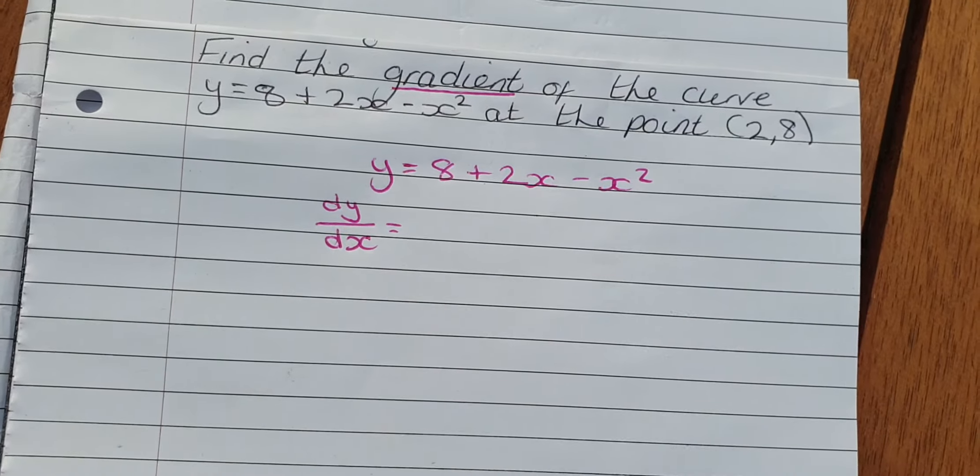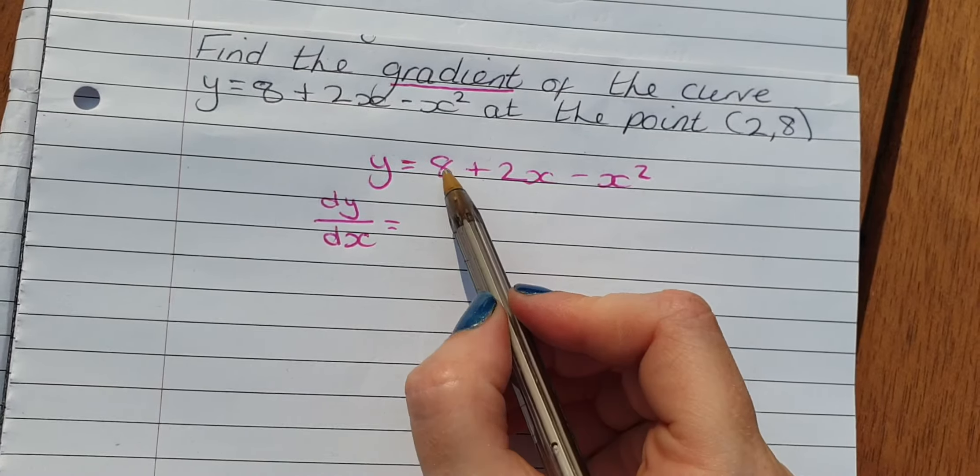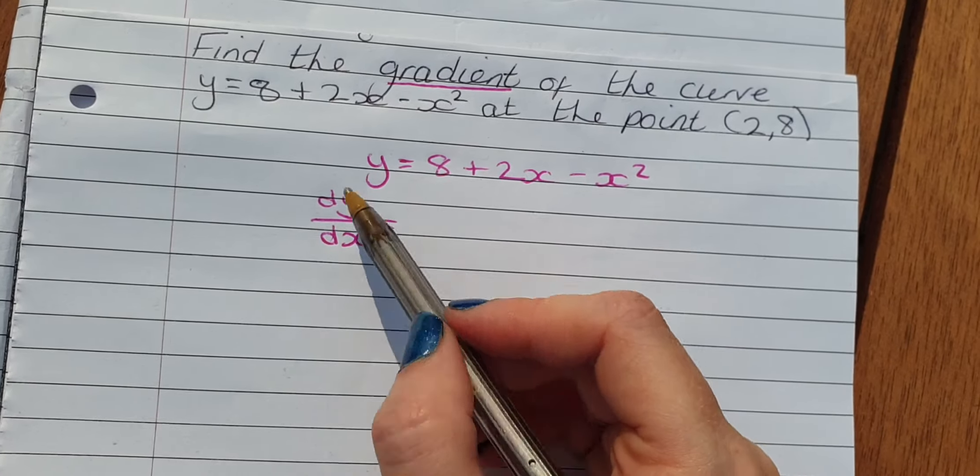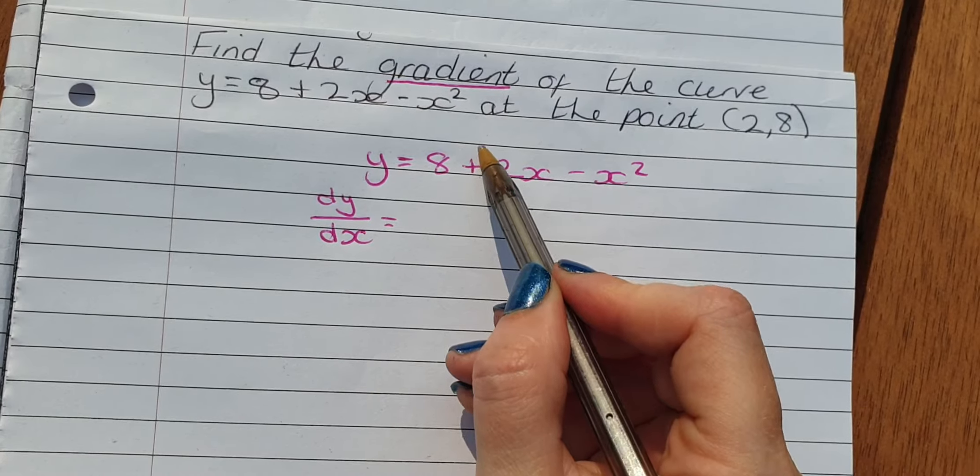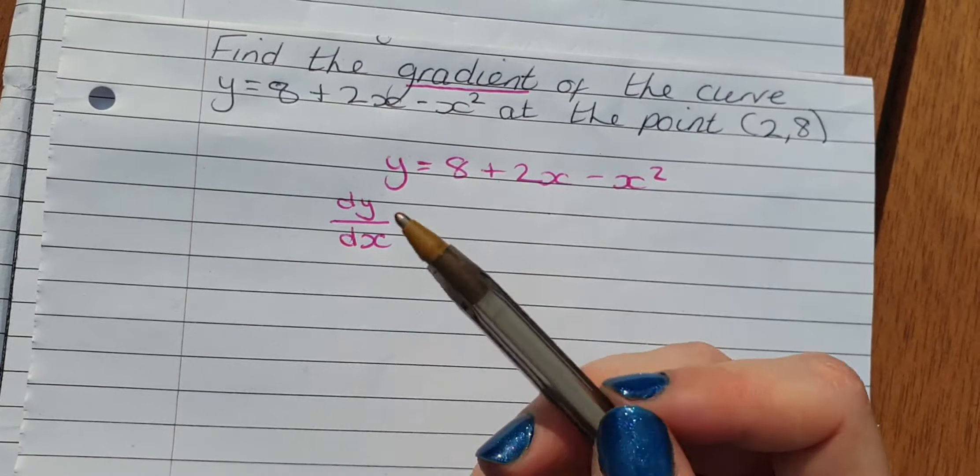Now you've done this already. If you differentiate a number, it disappears because that has an x to the power 0, and anything times by 0 is 0.